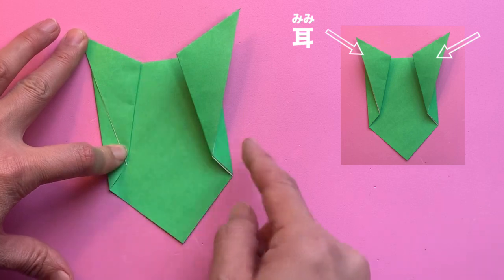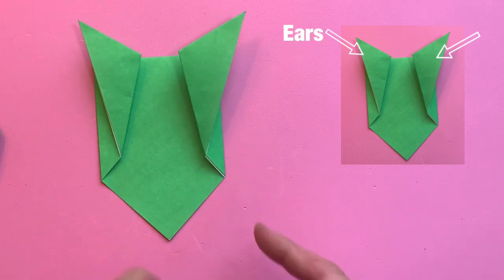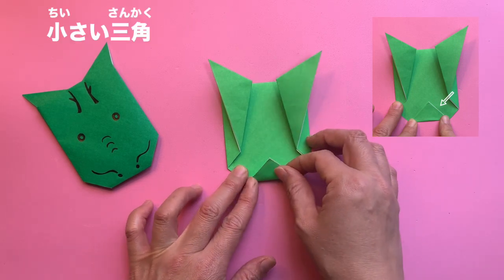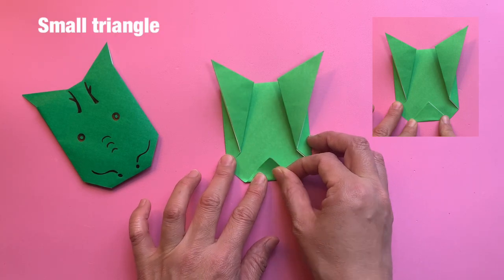Now the ears, mimi. Fold on the line. Make a small triangle, chiisai sankaku.